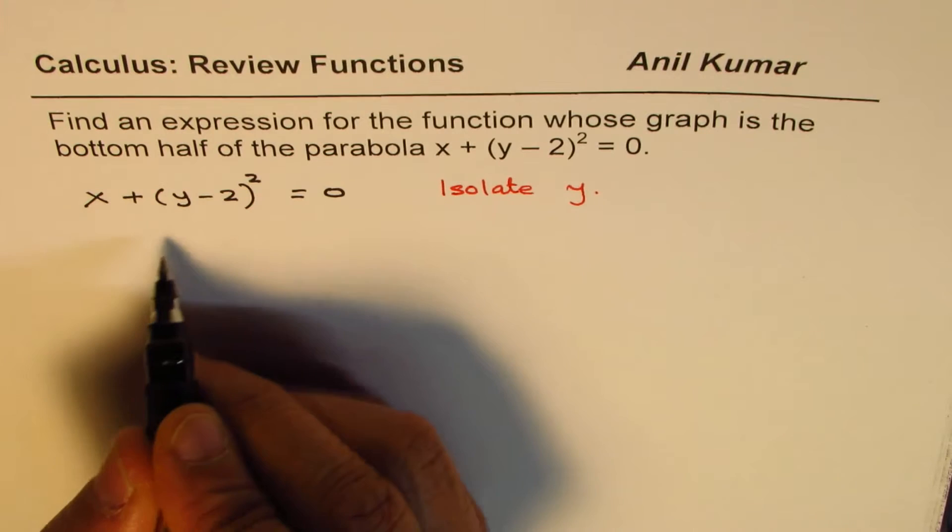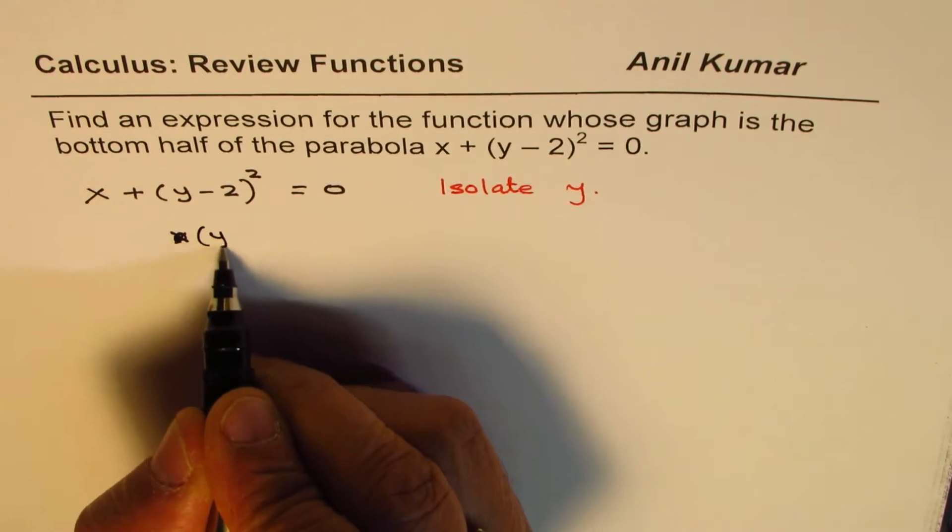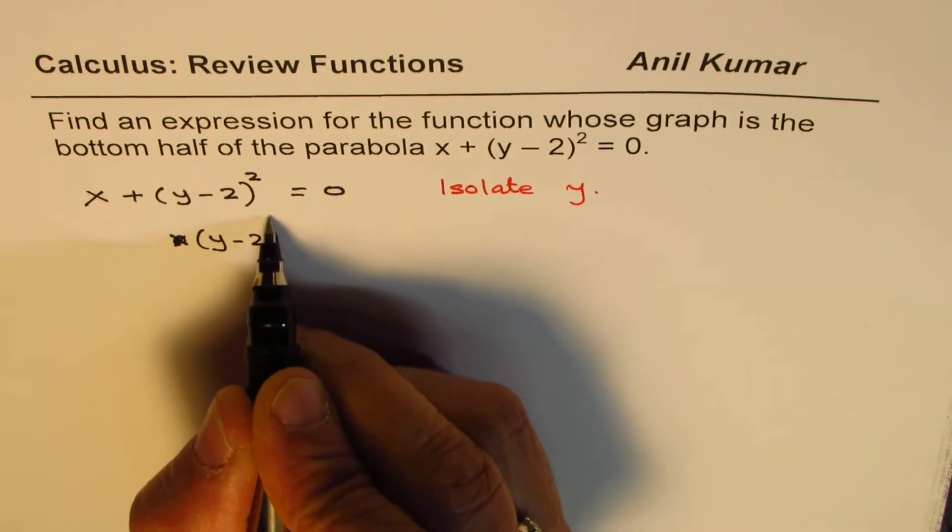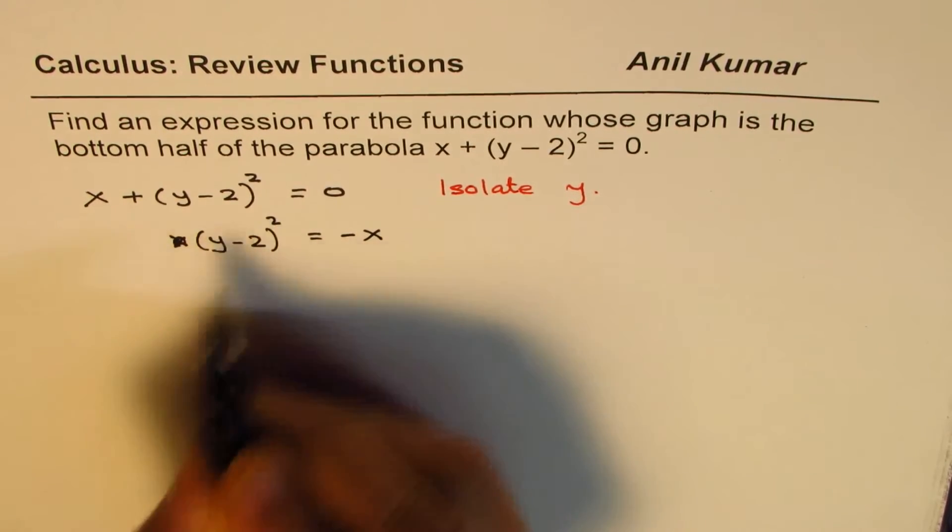Now we'll take x to the other side. So we get (y - 2)² = -x. Now we'll square root.